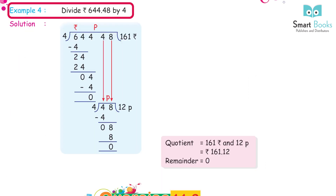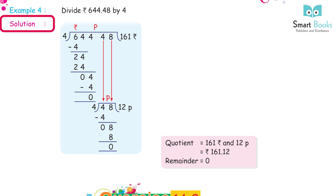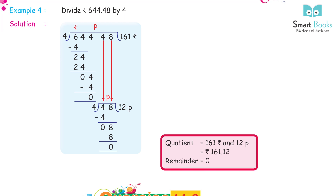Example 4: divide Rs. 644.48 by 4. Quotient = Rs. 161.12, remainder 0.